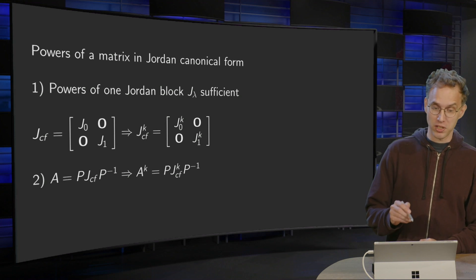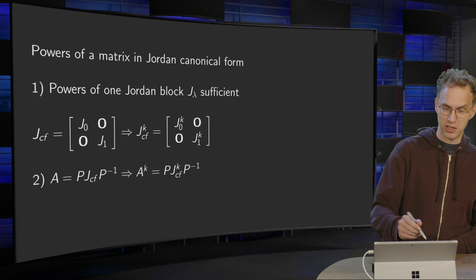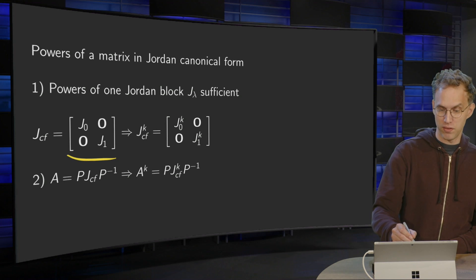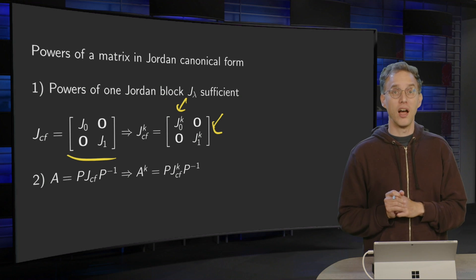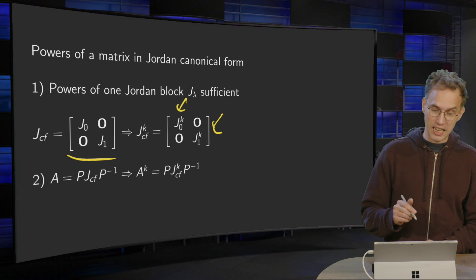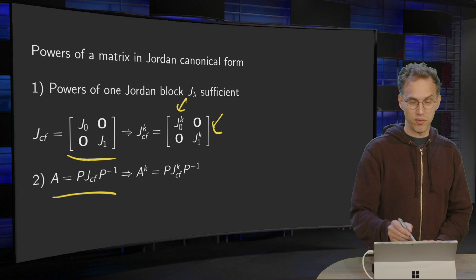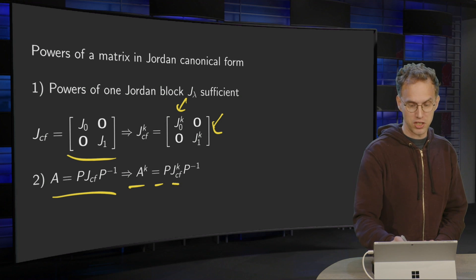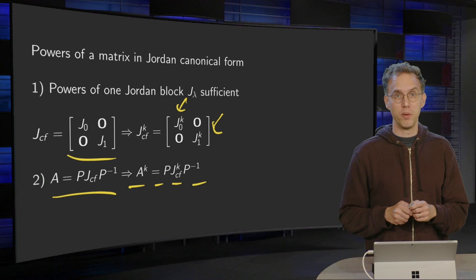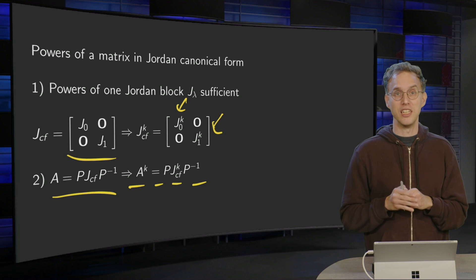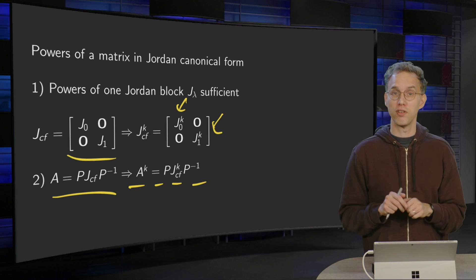First of all, if you want to compute powers of a JCF matrix, computing the power of one Jordan block is sufficient. Because if we have a block diagonal matrix, the kth power is just the kth power of each block. So we just have to deal with the matrix consisting of one Jordan block. Secondly, if your matrix is similar to a JCF matrix, then A to the power k is just P times JCF to the power k times P inverse. So we only have to be bothered with matrices which are already in JCF form.